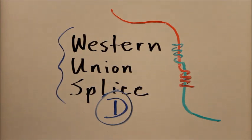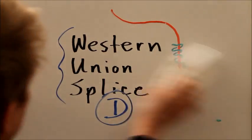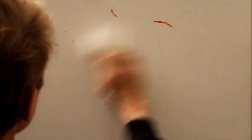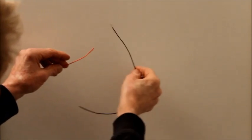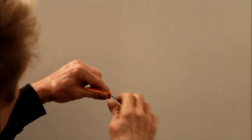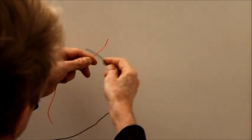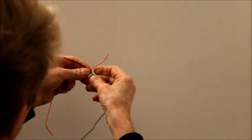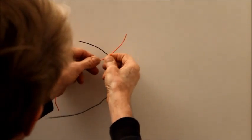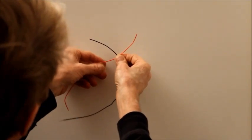Now a Western Union splice is described in the book. I'm going to try to make one here with a red piece of wire and a black piece of wire. I'm not going to take the insulation off these, and they're solid, not stranded. For a Western Union splice, you place them together like that.